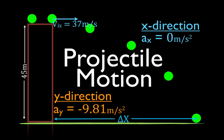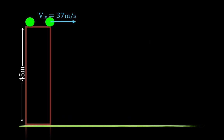In today's video I'm going to go over a problem involving two-dimensional projectile motion. We want to determine how far an object moves in the x-direction when it is projected from an initial height of 45 meters with an initial velocity in the x-direction — that is the horizontal direction — of 37 meters per second. When that object is projected and leaves the surface, it's going to follow a nice parabolic path.